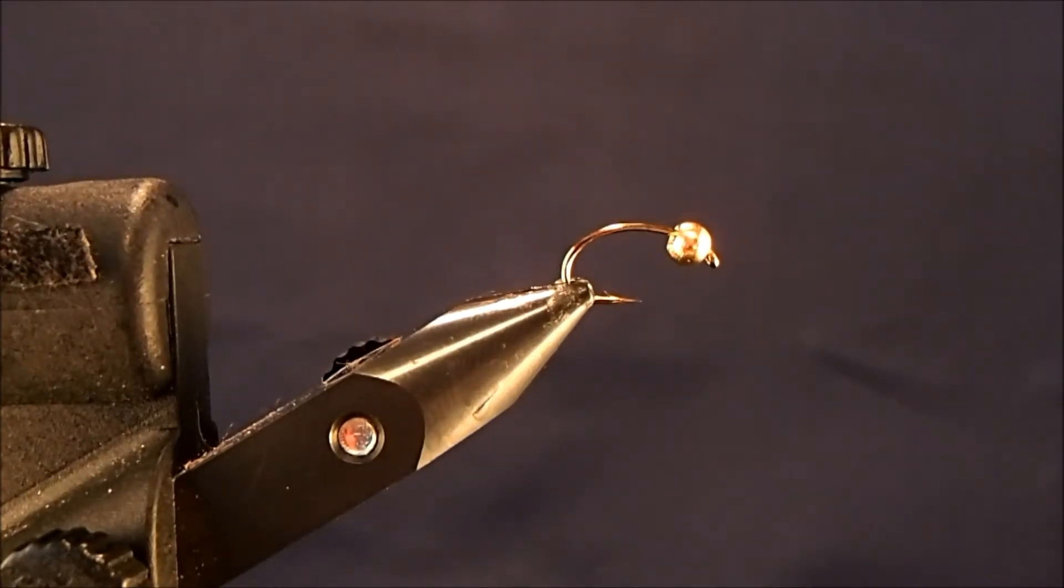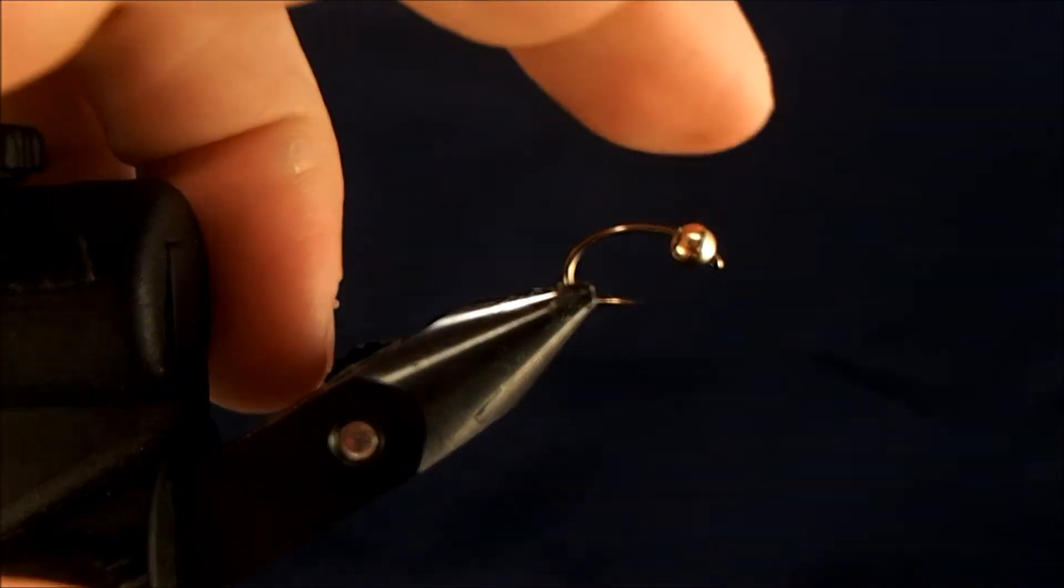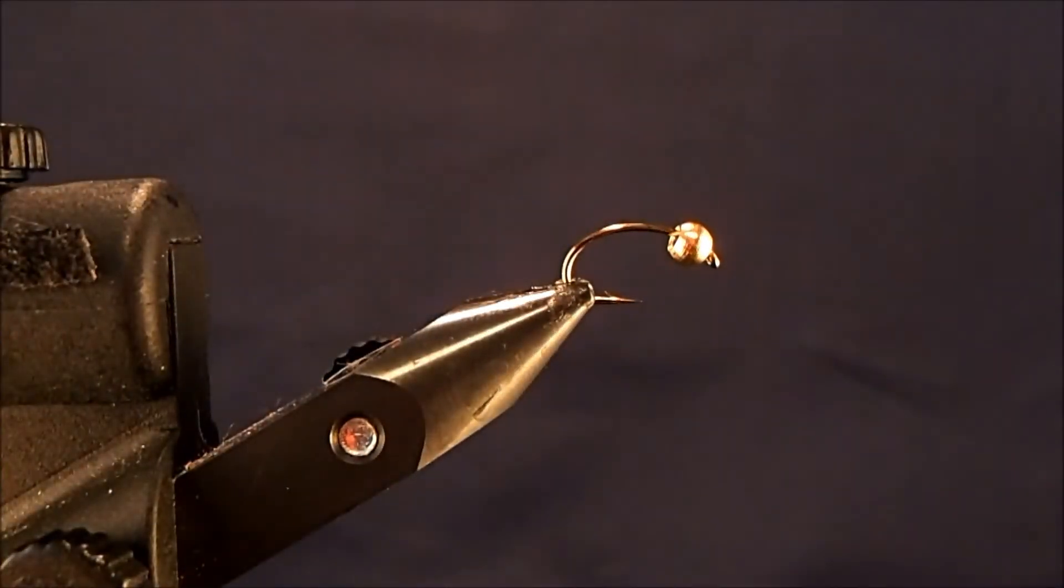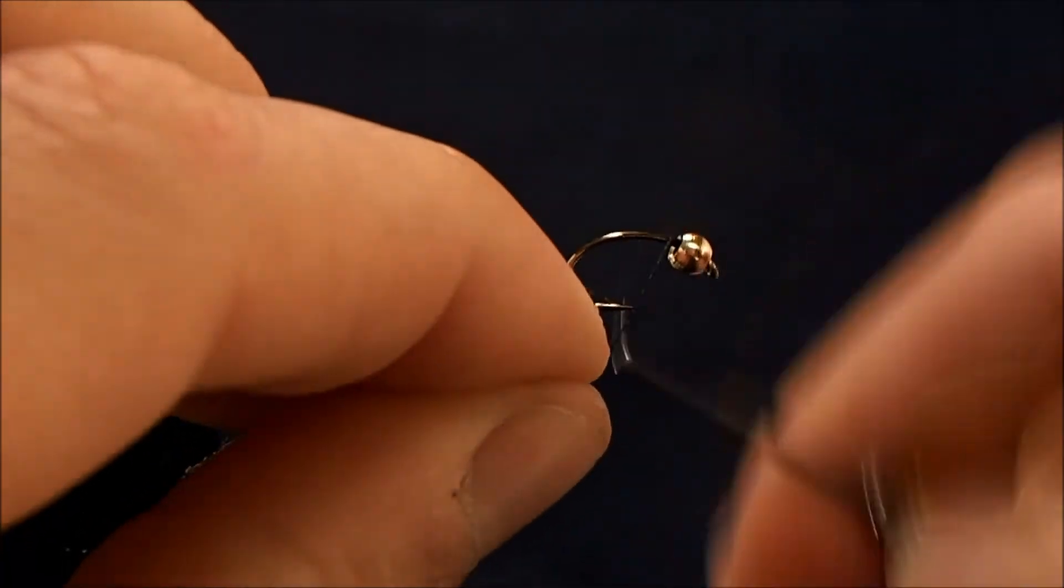I'm going to tie another simple but effective pattern, this is a brassy. I'm starting off with a 1/8 inch gold tungsten bead with a size 10 scud hook, and I'm going to take my 8-0 black thread.